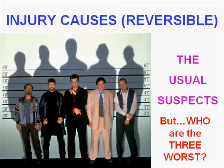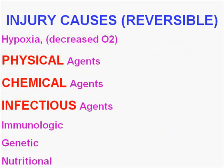I always refer to the causes of injury as the usual suspects. We can identify three classical agents: physical, chemical, and infectious. These are always discussed when we talk about carcinogenesis, birth defects or teratogenesis, inflammation, or any disease in general. There are other things, but these are the three main categories of injury.